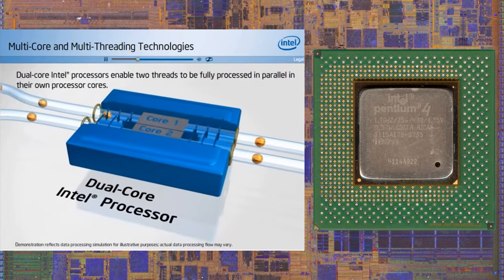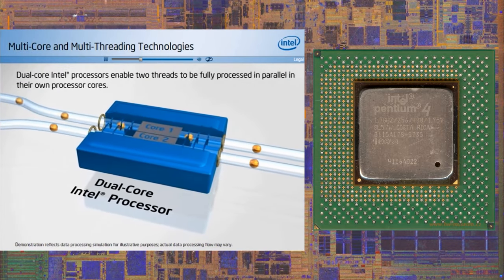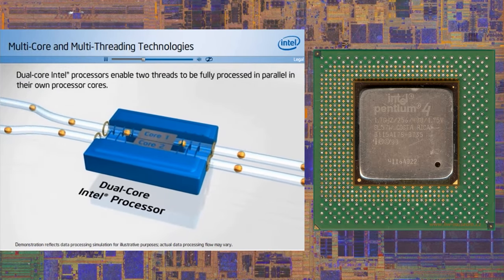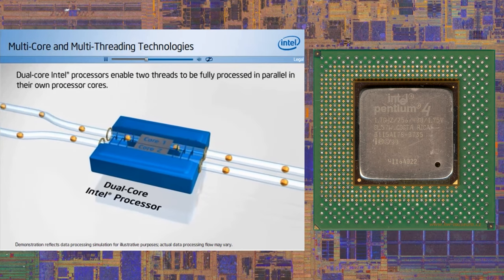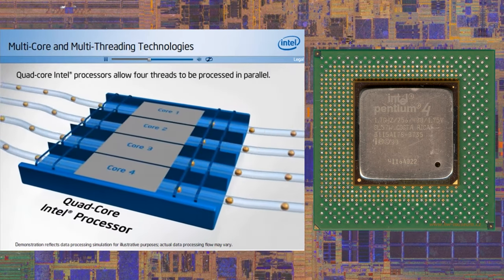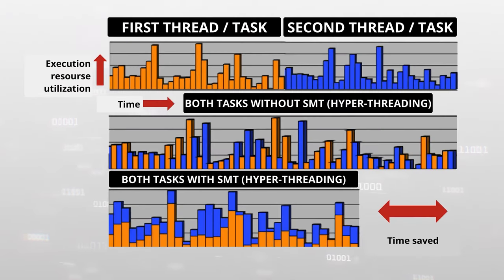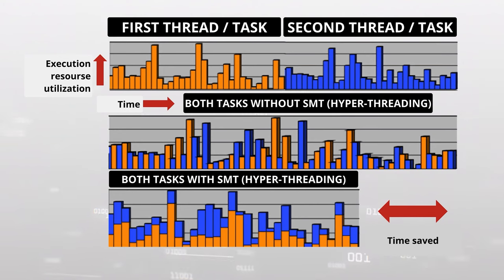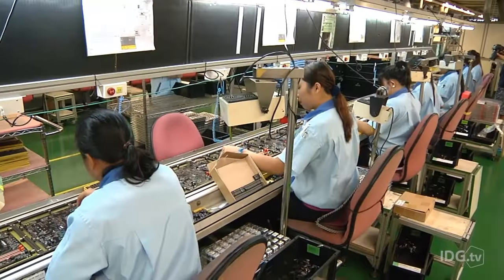Still, branch prediction did not remove the main problem — one thread per core. The solution to this was invented by Intel in 2002, when Pentium processors with simultaneous multithreading, or SMT, came out. The company called this technology by the marketing name hyperthreading, whereas Team Red calls it multithreading. But it is basically the same thing.